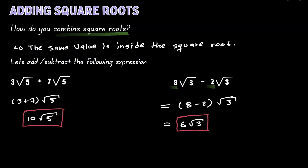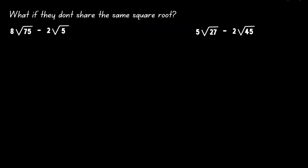As long as they have the same value inside the square root, we can just combine the outside values of each term. Let's take a look at the following examples. We want to explore the idea of — what if they don't share the same value inside the square root?